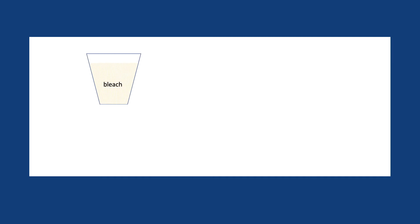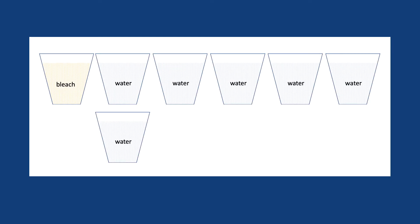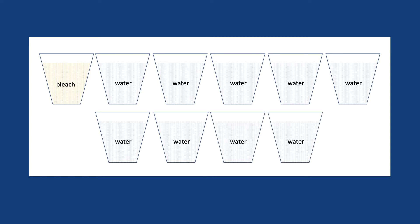Use the same cup or jar to add nine times as much water into the same bottle. Now you have 10 total parts of which one is bleach, which makes a 10% or 1 in 10 dilution of bleach.